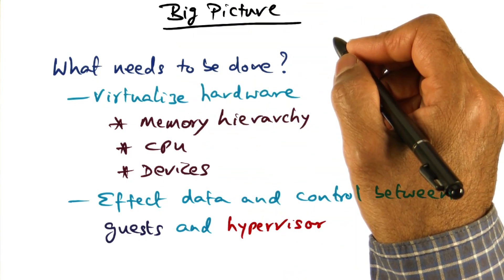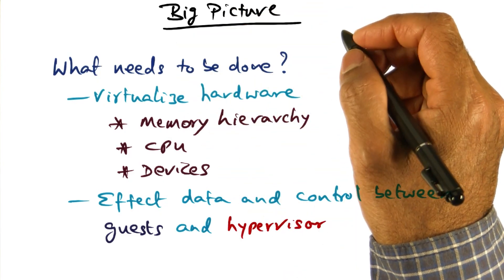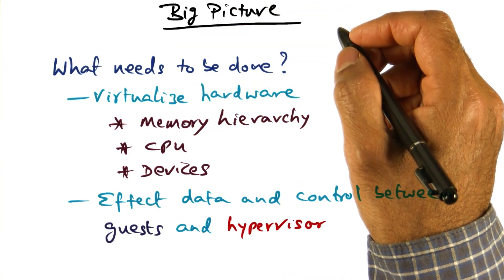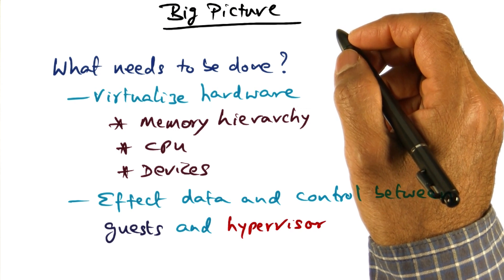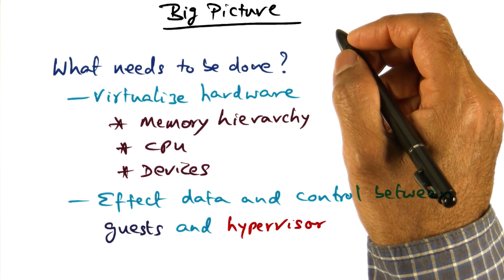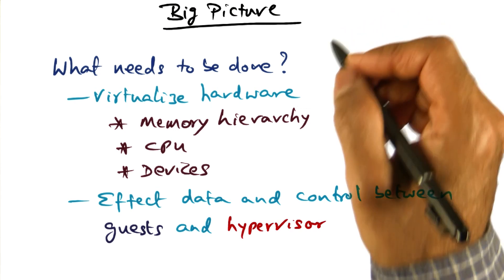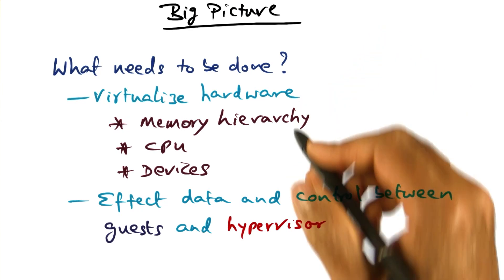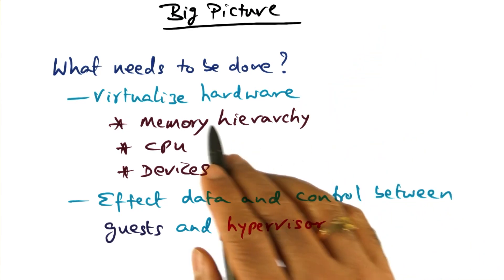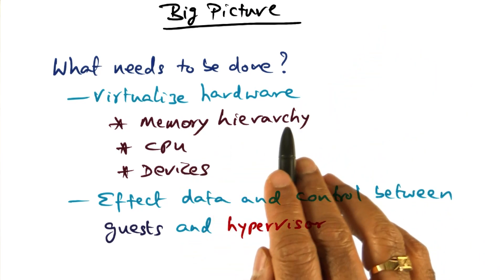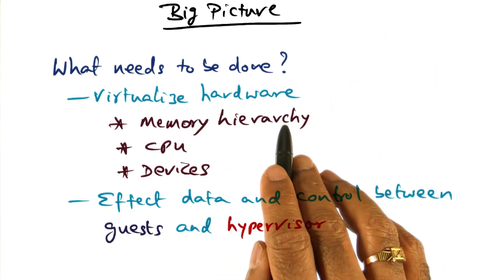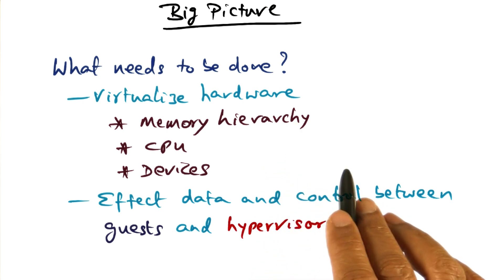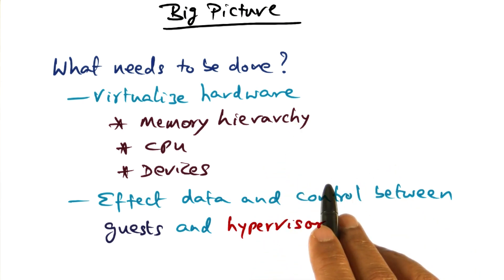So what is the big picture with virtualization? In either of the two approaches that I mentioned, whether it is full virtualization or para-virtualization, we have to virtualize the hardware resources and make them available safely to the operating systems that are running on top of the hypervisor.